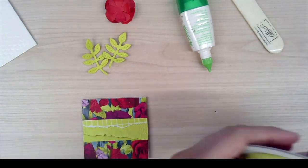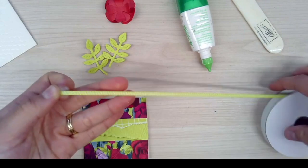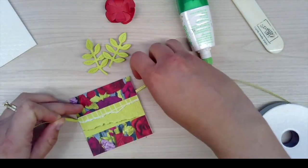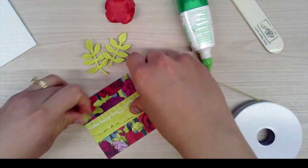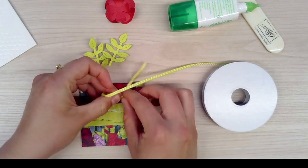Now I grabbed some of the Ribbon Duo combo pack in the Lemon Lime Twist, the 1/8 inch ribbon here, and I'm just going to tie a quick little knot up here just to add a little extra embellishment.